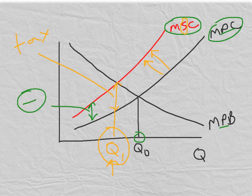a lower quantity. This is how we use taxes to correct market failures arising from negative externalities.